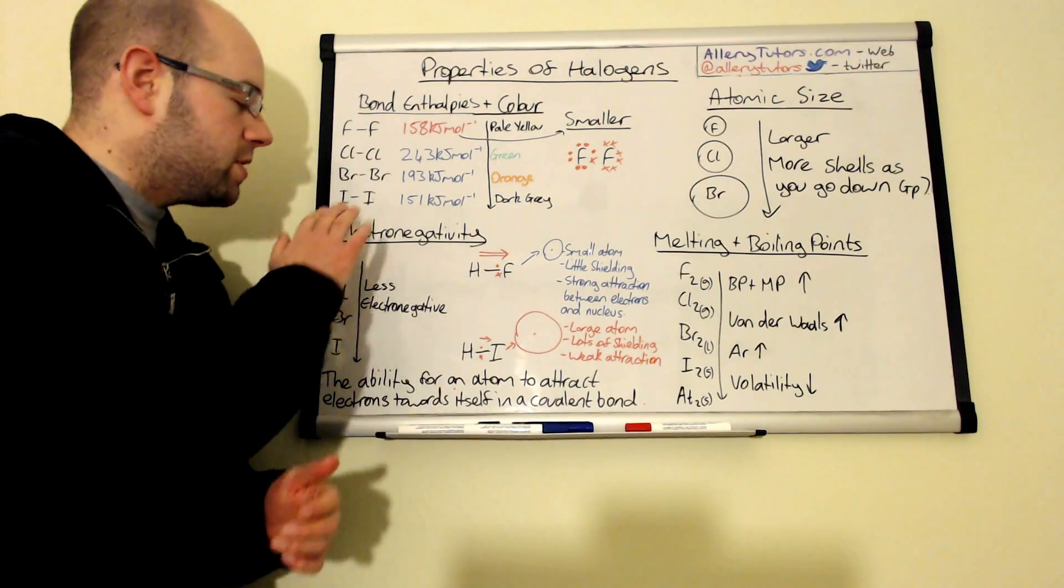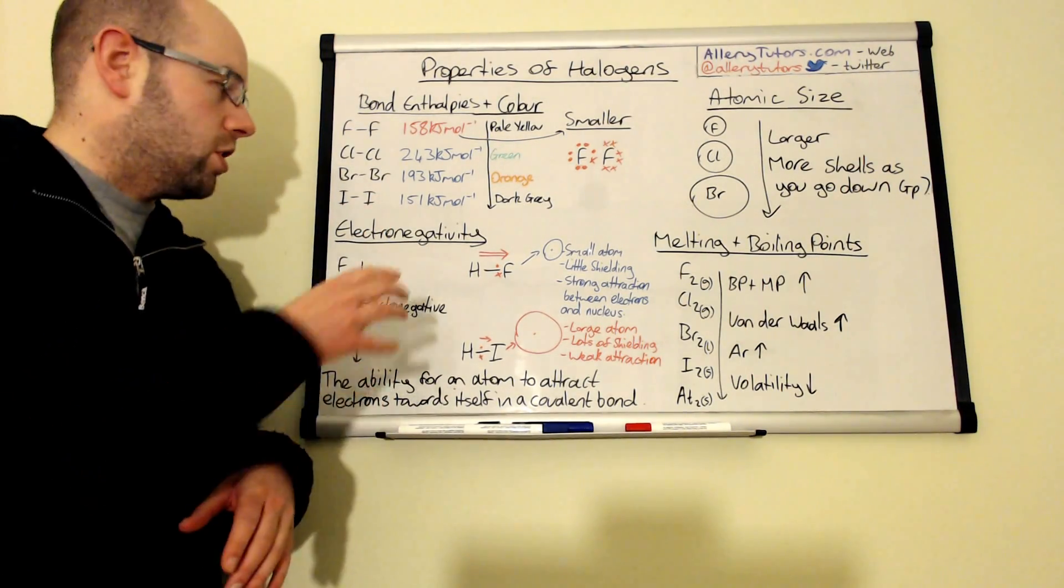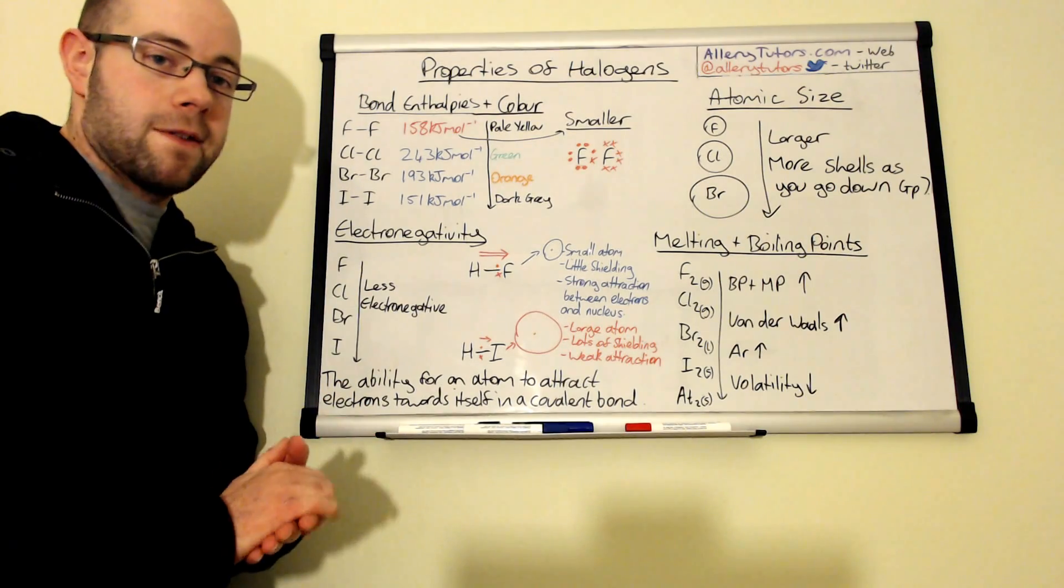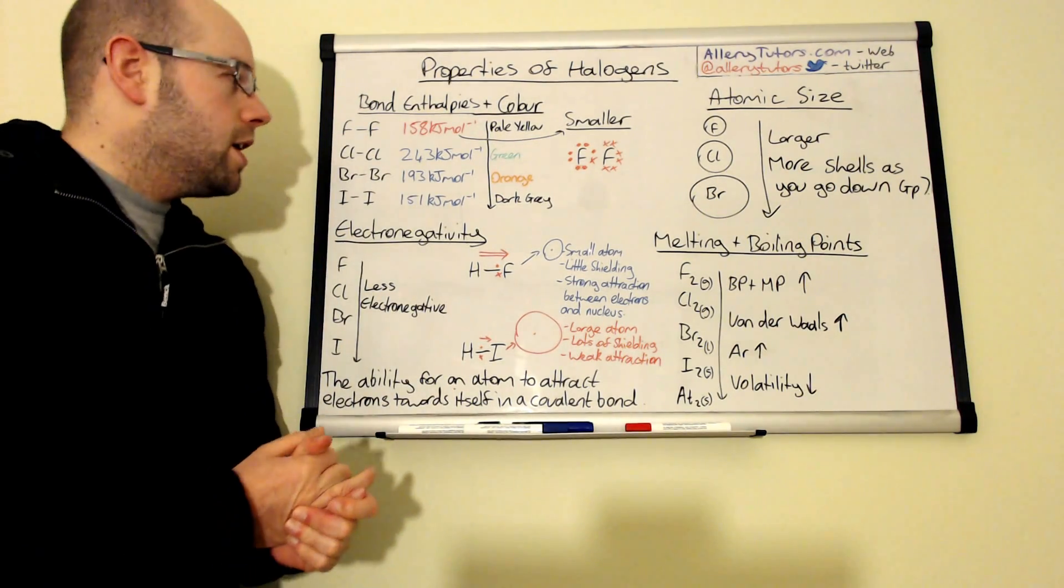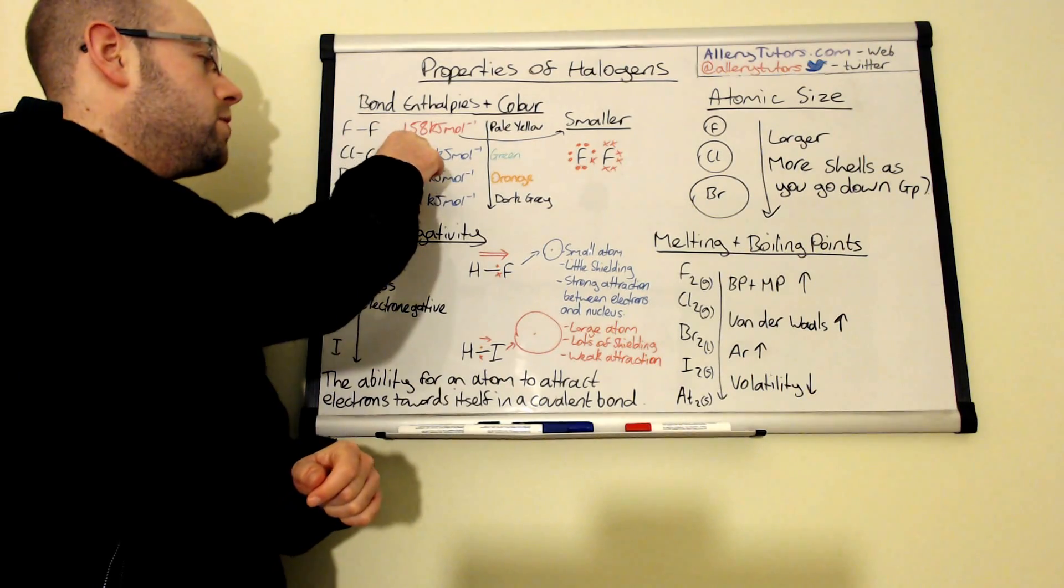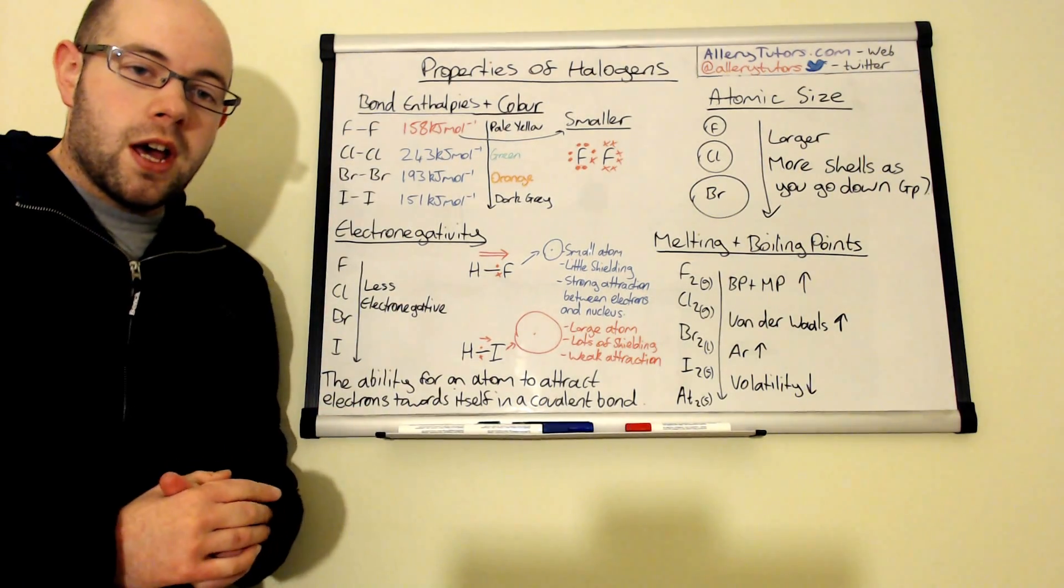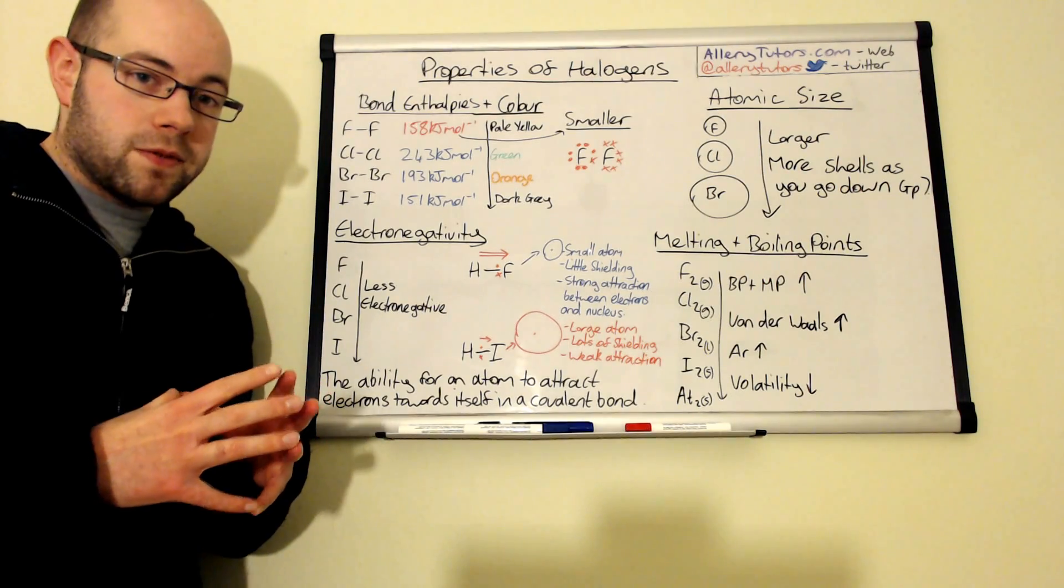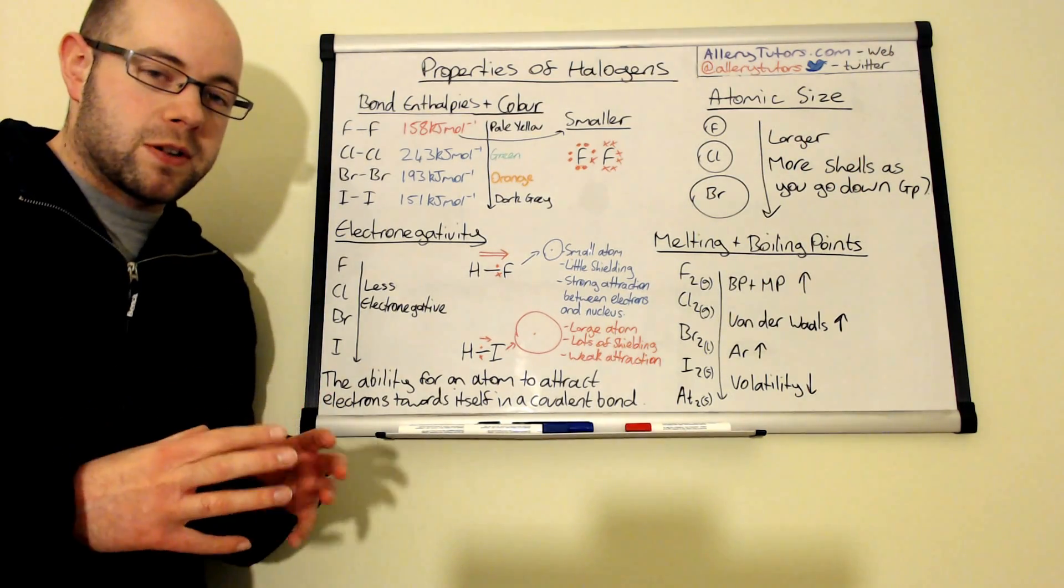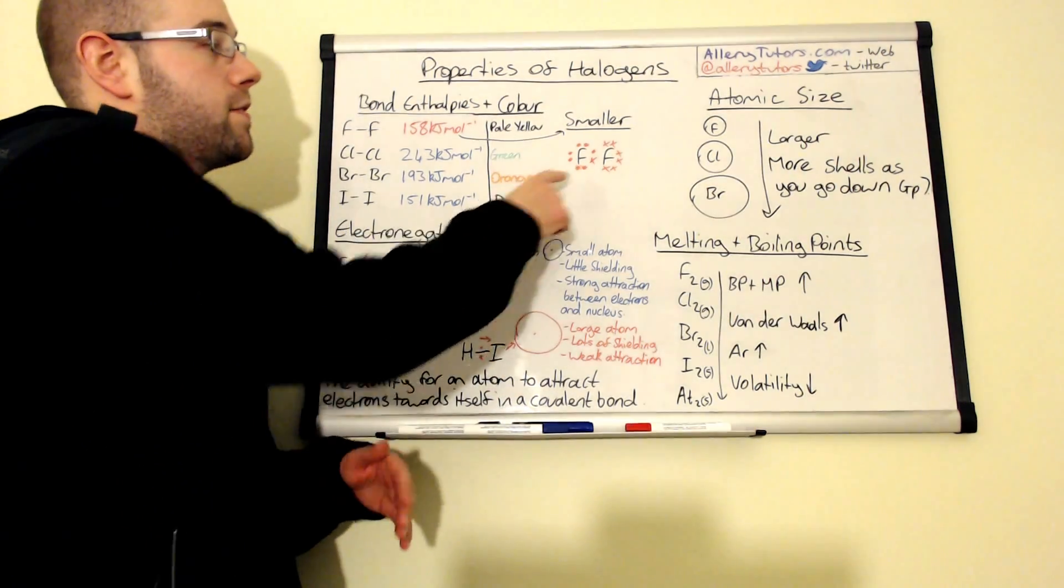So it's all to do with the distance between the nucleus and shielding and there's lots of shielding obviously as you go further down. With the exception of fluorine, but actually if it followed a trend fluorine should have the strongest covalent bond out of all of them but actually fluorine is obviously a very very small atom and it's got very little shielding.